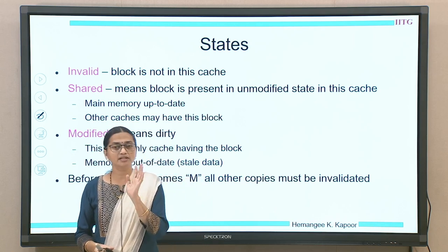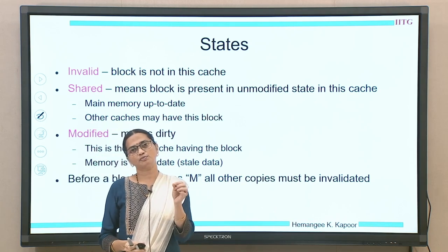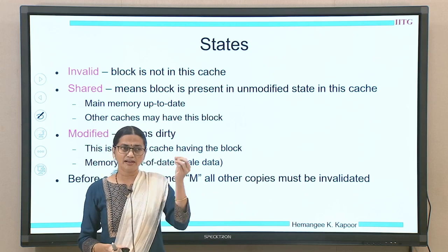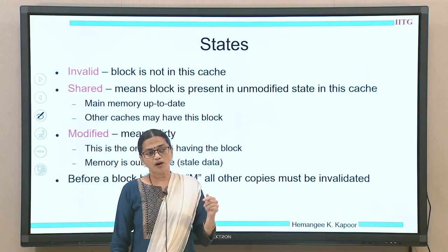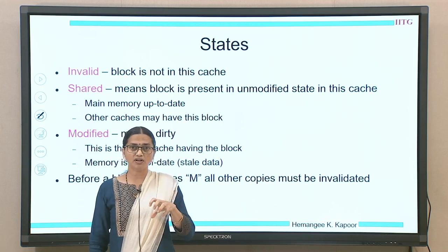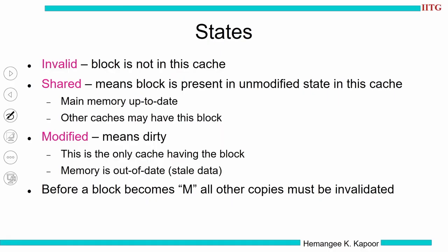The third state is Modified, which means a dirty copy — this particular cache has changed the cache block. It is the owner of this data item because in future, if a new reader or writer comes into the system, this cache must provide the data. In the Modified state, this is the only cache holding the block, because the most up-to-date copy is here and not even in memory, since this is a write-back protocol.